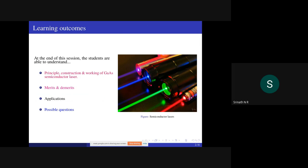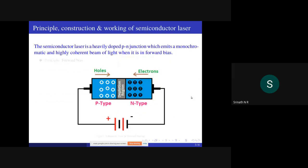Semiconductor laser principle, construction and working: The semiconductor laser is a heavily doped p-n junction which emits monochromatic and highly coherent beam of light when it is in forward bias.